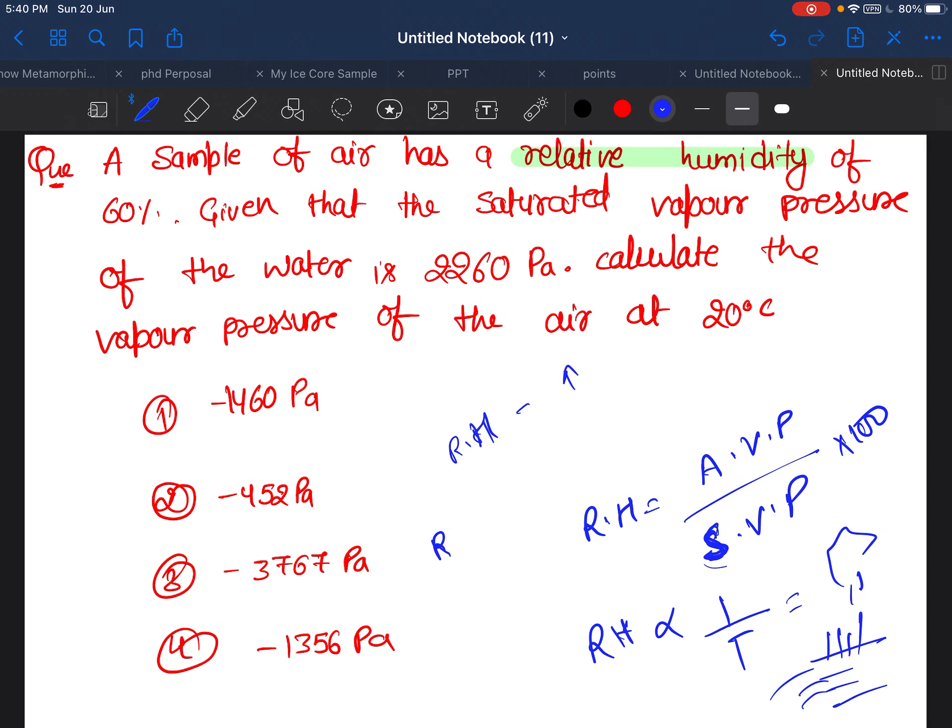That's the reason relative humidity is inversely proportional to temperature. High temperature means relative humidity is less. At low temperature, there is high relative humidity.